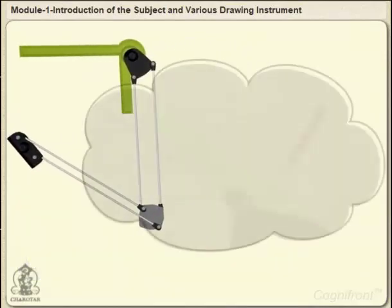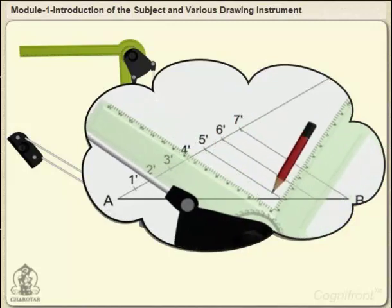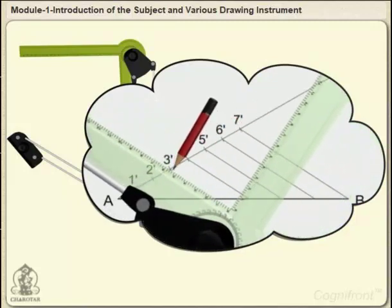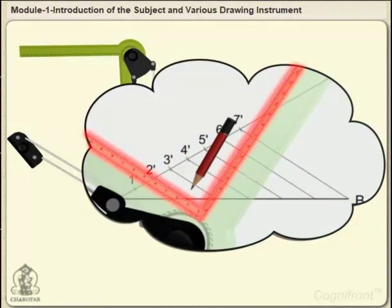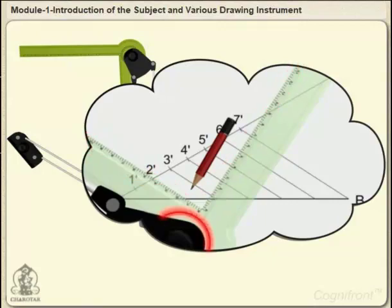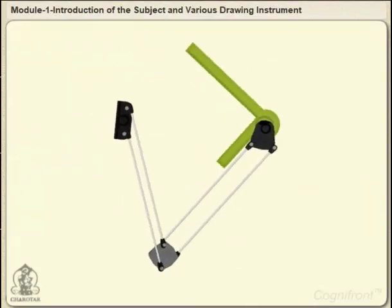The drafter is a very useful tool for drawing parallel lines at any given inclination. It has scale as well as protractor in build. Looks like a robot, isn't it?